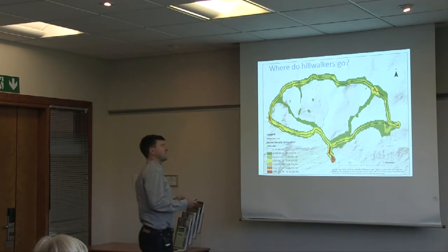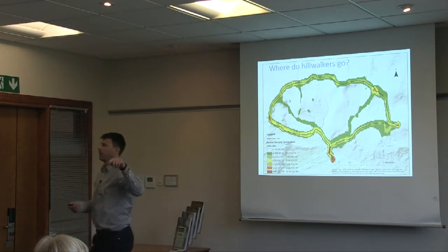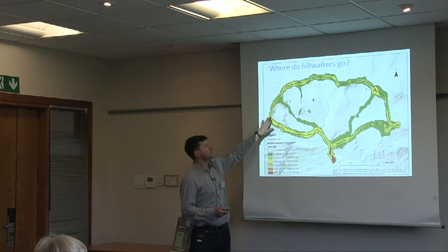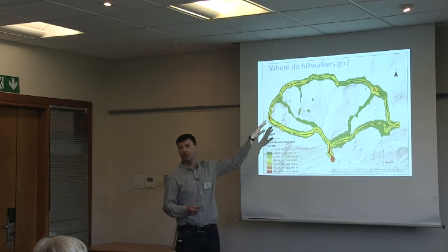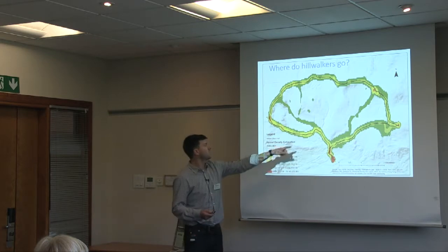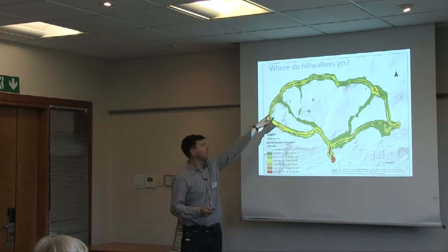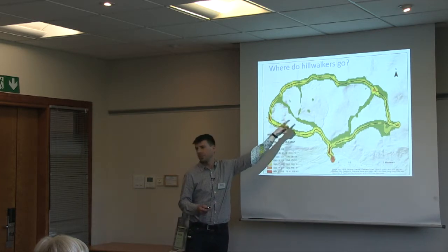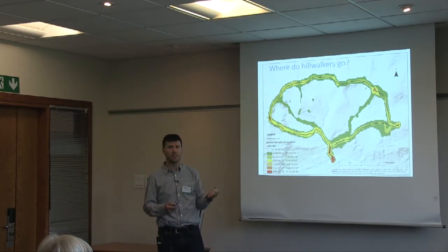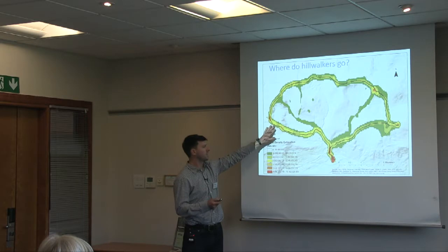One thing we can do is look at the intensity of use. Comparing that with the raw data, we can start to pick out key areas where people are spending more time — for example, hotspots at the Munro peaks where people probably stop. We can also see the trail itself as an obvious hotspot, and start to identify places where people more often go off trail. That can be important information when designing interventions such as signage or other management actions at this site.